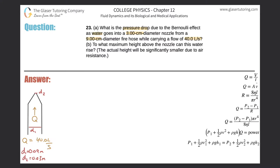We have certain diameters. The diameter of the hose was nine centimeters — I converted that to meters — and the nozzle was three centimeters, also converted to meters. We probably need the radius, not the diameter, so divide all of these by two. R1 will be equal to 0.045 and R2 will be equal to 0.015, both in meters.